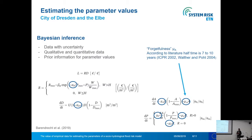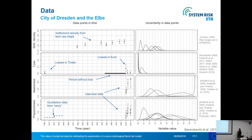We want to estimate the parameter values for the human-flood system of the city of Dresden using Bayesian inference. We have data with uncertainties — both qualitative and quantitative data — to estimate the parameters, and we can use prior information. For example, for the forgetfulness parameter, according to the literature, after a flood event the awareness is reduced to half of what it was within 7 to 10 years.